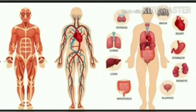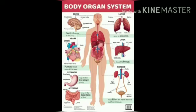The human body is a wonderfully efficient and complex machine. It has organs and systems that are specialized to perform specific functions. The stomach and intestine along with liver and pancreas help in the digestion of food, and it is included in the digestive system.